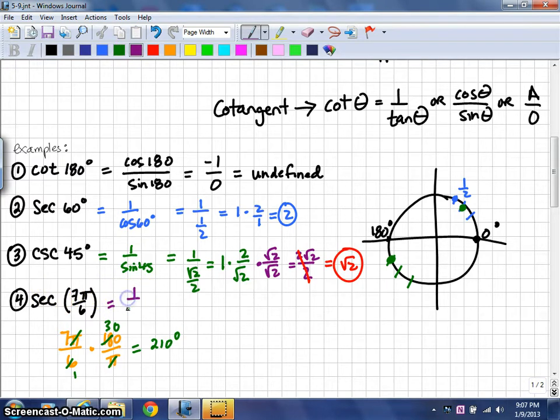So, we're really trying to calculate 1 over the cosine of 210 degrees. So, at that location, the cosine value there is going to be negative square root of 3 over 2.